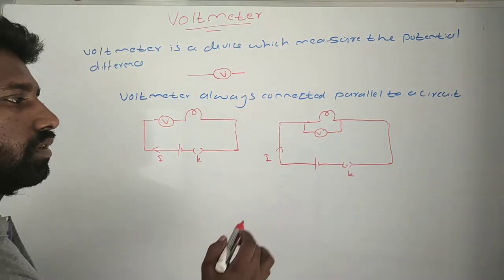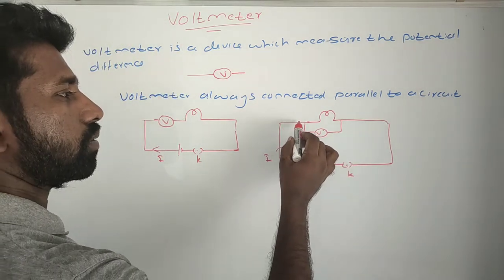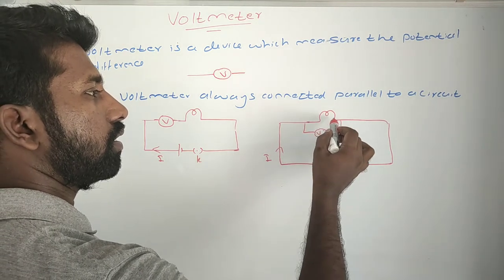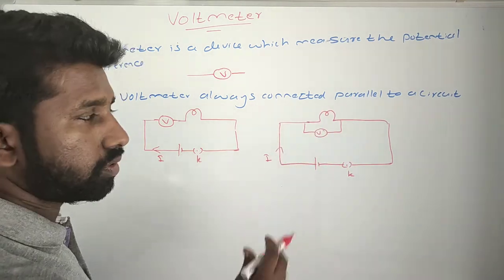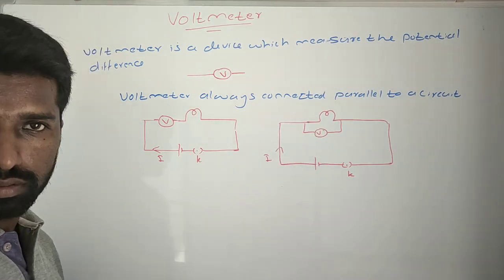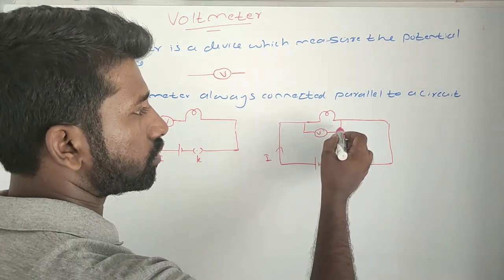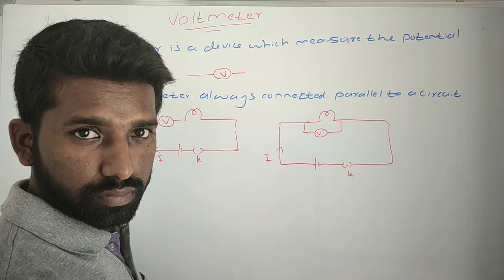So now you see the current will come here and most of the current passes through this. This is the low resistance part. So the bulb will get most of the current. Very few current only passes through this voltmeter.